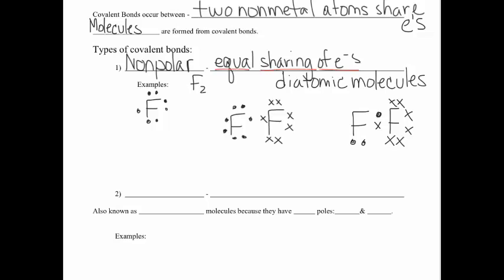Another acceptable way to draw this is with a line between the two atoms representing that shared pair of electrons. When you go to count how many electrons your fluorines have, you have to count that line as if it's a pair of electrons. Let's count the electrons around each fluorine atom — each one ends up with eight electrons total, satisfying the full octet.